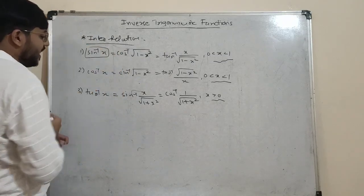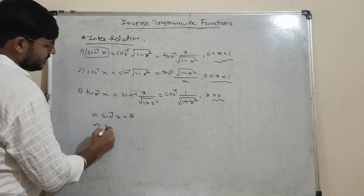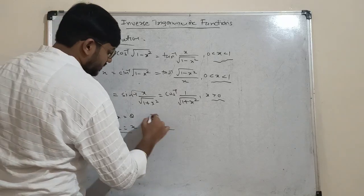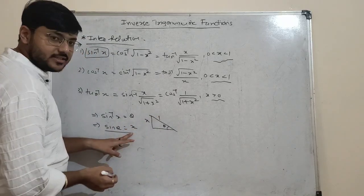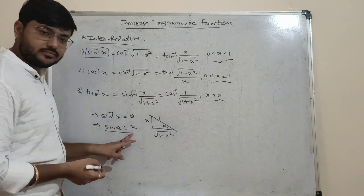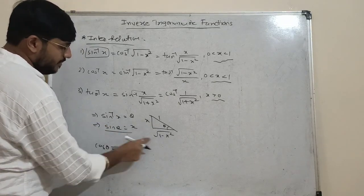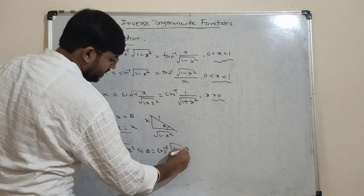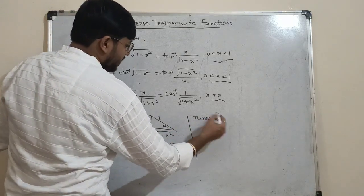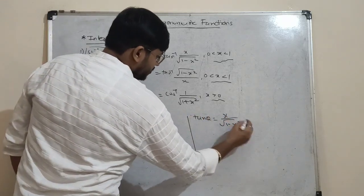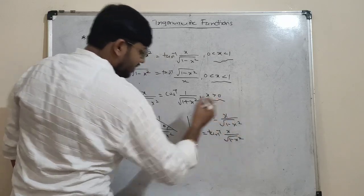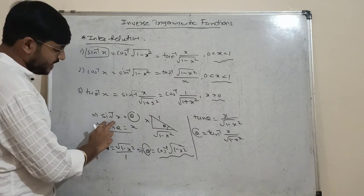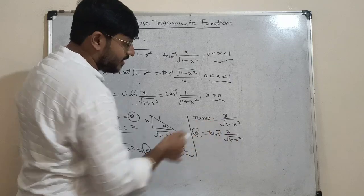Let me show how this works using a triangle. Let sin⁻¹x = θ, so sin θ = x = opposite/hypotenuse. The adjacent side is √(1-x²). Then cos θ = √(1-x²)/1, so θ = cos⁻¹(√(1-x²)). Also tan θ = x/√(1-x²), so θ = tan⁻¹(x/√(1-x²)). These three expressions for θ are all equal: sin⁻¹x = cos⁻¹(√(1-x²)) = tan⁻¹(x/√(1-x²)).